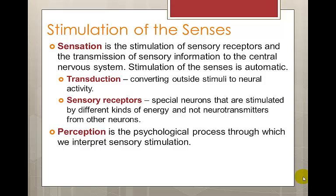The sensory receptors are specialized forms of neurons, the cells that make up the nervous system. Instead of receiving neurotransmitters from other cells, these receptor cells are stimulated by different kinds of energy. For example, the receptors in the eyes are triggered by light, whereas vibrations trigger the receptors in the ears. Touch receptors are triggered by pressure or temperature, and the receptors in taste and smell are activated by chemical substances.